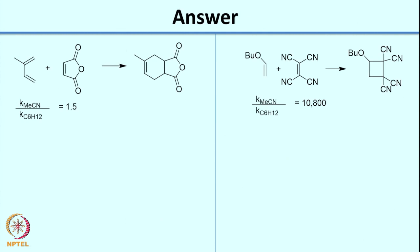The first reaction is an example of a 4π plus 2π cycloaddition reaction, also called the Diels-Alder reaction. The Diels-Alder reaction is a concerted reaction, meaning you do not have an intermediate — what you have is a cyclic transition state. It comes under a class of reactions called pericyclic reactions.